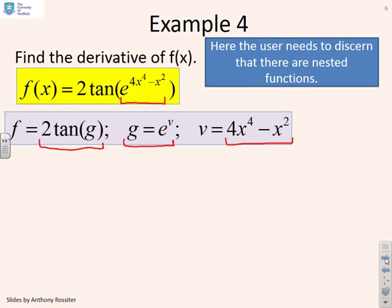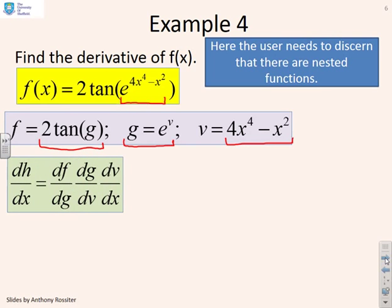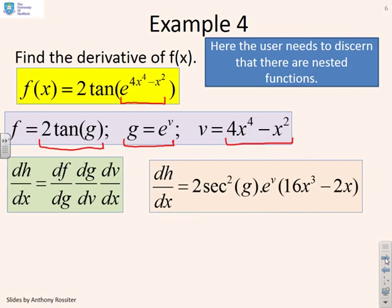Because now I can use the chain rule and all the corresponding derivatives are going to be simple. The chain rule says dh/dx is df/dg, dg/dv, dv/dx. So now dh/dx is going to be 2 sec squared g, that's the derivative of f, times e to the v, that's the derivative of g, times 16x cubed minus 2x, which is the derivative of v.